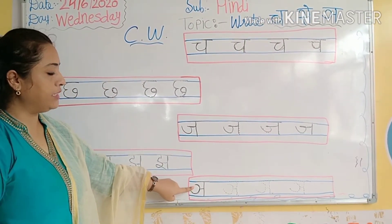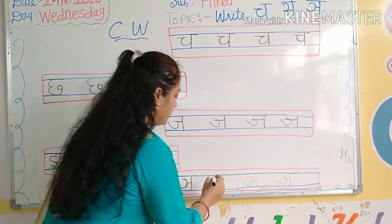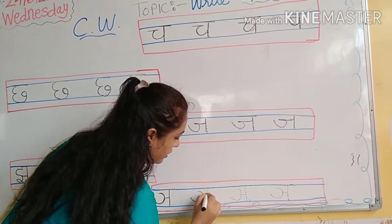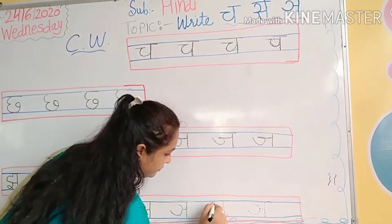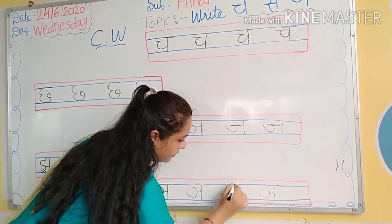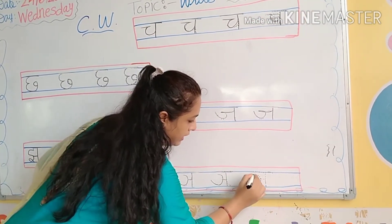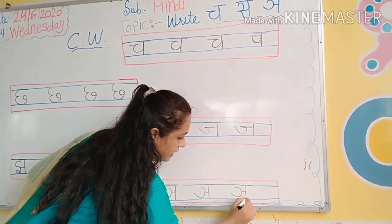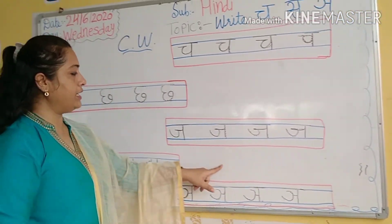Now kids, tell me — kya hai ye? Chh. Chh likhna hai yahan pe aapko. Kya likhna hai? Chh. Aapki book mein jo dots diye hain, unke upar aapko aise press karte jana hai. Chh. Kya likhna hai? Chh. Okay kids?